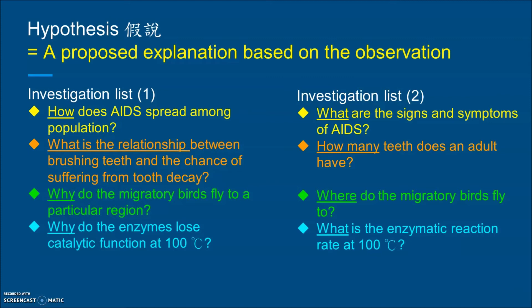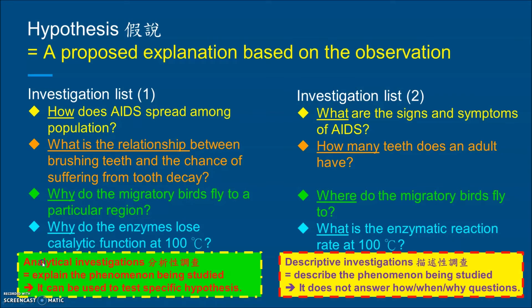By reading these two lists, you can see that the left hand side represents analytical investigations — we try to explain something: how it spreads, what the relationship between A and B is, or why something happens. The right hand side — what, how many, where — represents descriptive investigations, where we simply describe the biological phenomenon being studied.